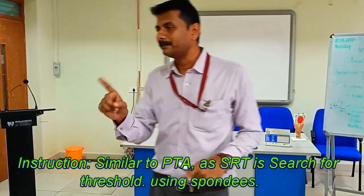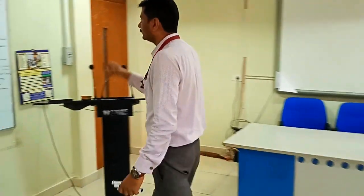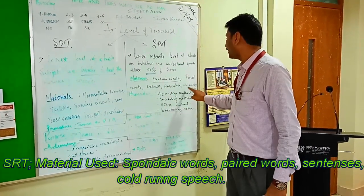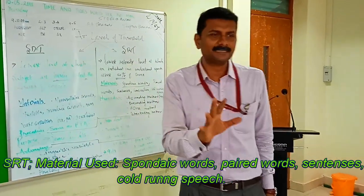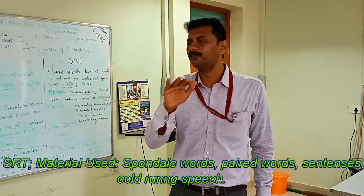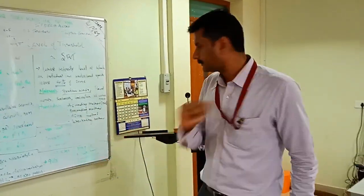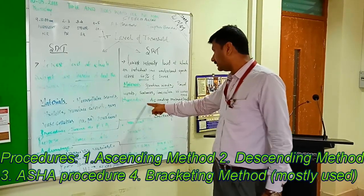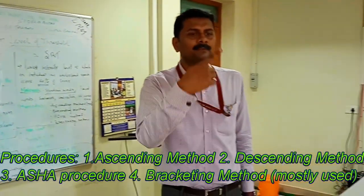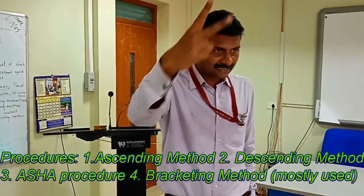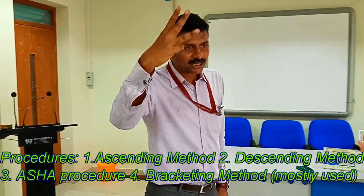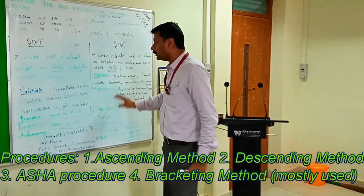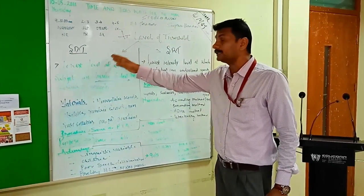The instruction is similar to PTA because it is a threshold test. Materials used for SRT are spondee words, paired words, sentences, conversation, and cold running speech. Cold running speech is speech that does not have any intonation — it is flat, robotic speech. There are four prescribed procedures: the ascending procedure, the descending procedure, the ASHA recommended procedure, and the bracketing method.